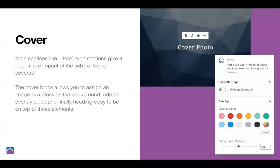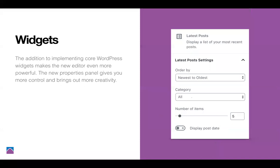Widgets have existed for years, so there's nothing new there, but widgets are basically pre-built sections. For example, if you want to show all the pages, that's a widget. If you want a section showing a list of menus, or show all the blog categories, those are all pre-made widgets from WordPress out of the box. You can also integrate widgets within blocks.